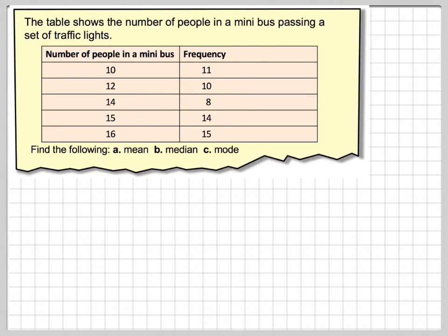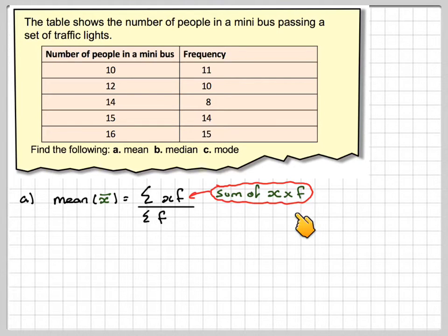We have to find the mean, median and the mode. So the mean this time is, we use this symbol x bar, it means the sum of x times f. So we have to do 10 times 11, 12 times 10, etc., rather than add them up, as you'll see. So the sum of x times f divided by the sum of the frequencies.